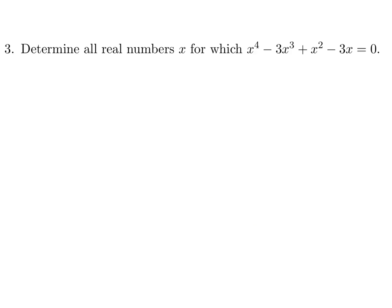Determine all real numbers x for which x to the power of 4 minus 3x cubed plus x squared minus 3x is equal to 0. The first thing I'll do is factor out an x and that'll give me x to the power of 3 minus 3x squared plus x minus 3. And then let's see what I can do here. From this guy, I'll just factor out x squared, so that'll be x minus 3 remaining.